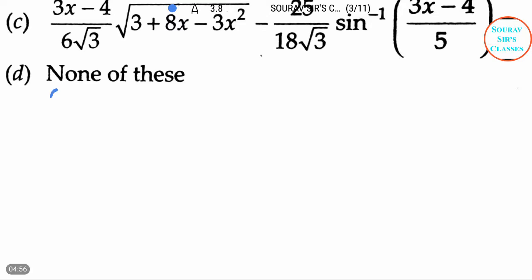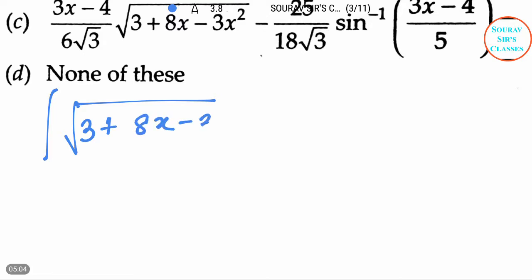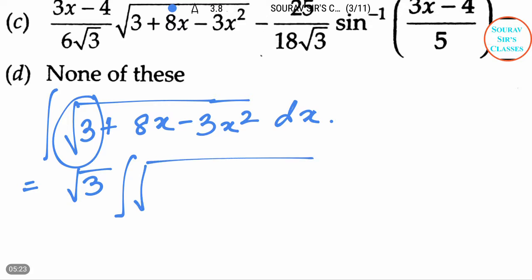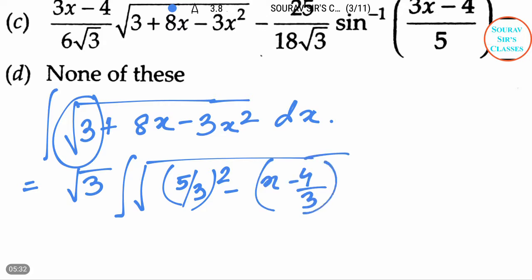Our question is integration of root over (3 plus 8x minus 3x²) dx. We are taking root 3 as common — this is a constant part — so root 3 comes out of the integration. Now integration of root over (5/3 whole square minus (x minus 4/3) whole square) dx.